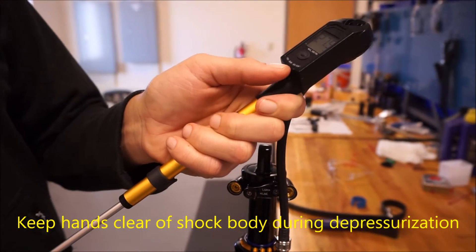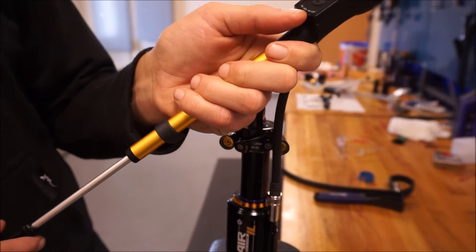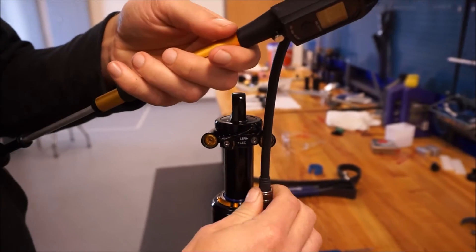Bleeding the air slowly allows the shock not to collapse under the high pressure of the negative air spring. And from here we can unscrew.